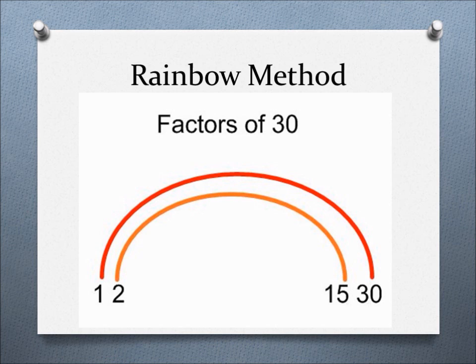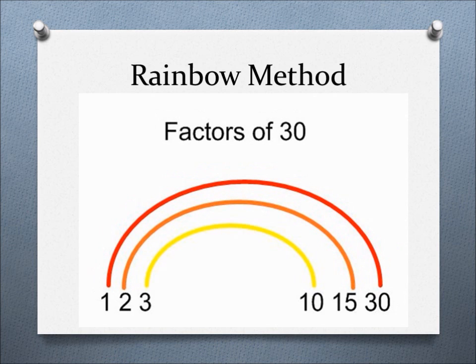Next, you see if 3 is a factor of that number. If so, what times 3 will give you that number as a product? Then 4, if 4 is not a factor, skip and go to 5.